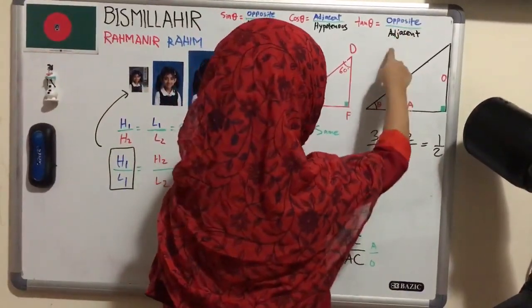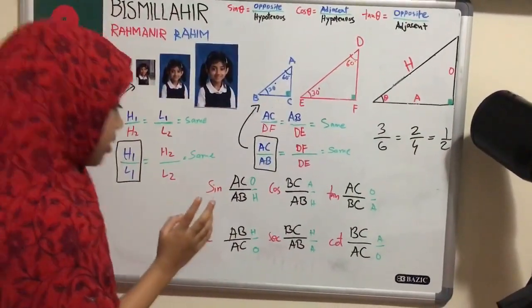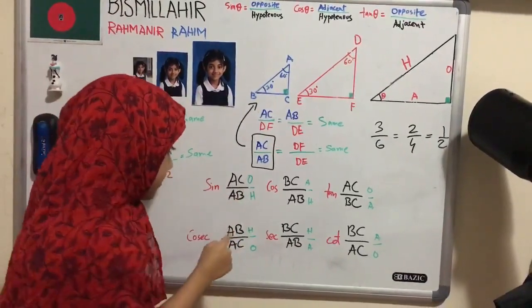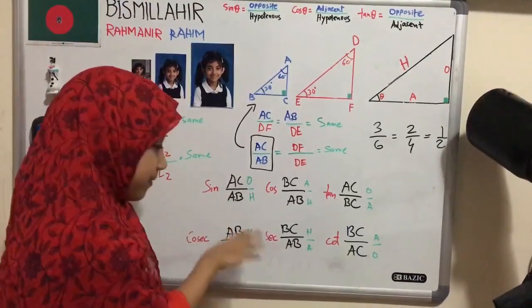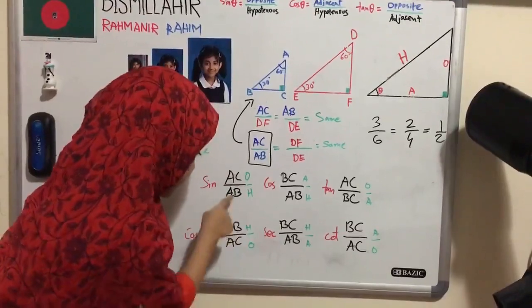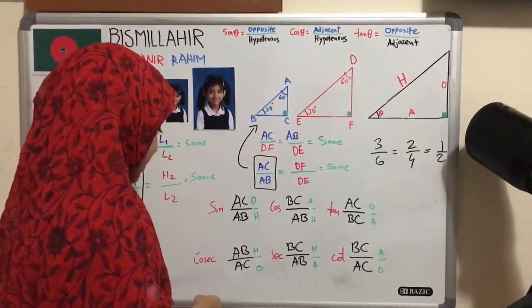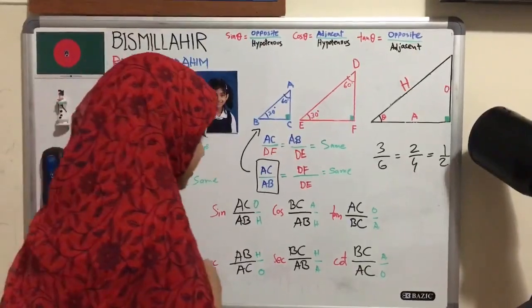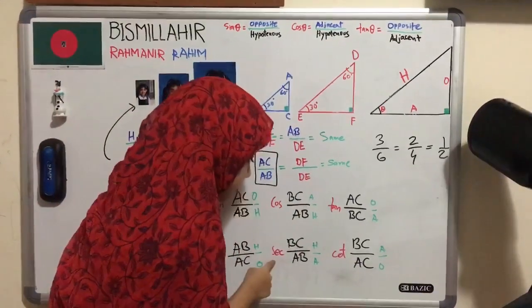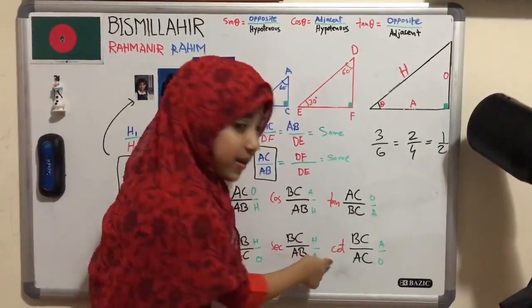And then you flipped. So now we're gonna alternate it. So AC comes down and AB goes up. So that becomes hypotenuse by opposite. That's your cosec. Now if we flip these one will be my sec. If we flip these one will be my cot.